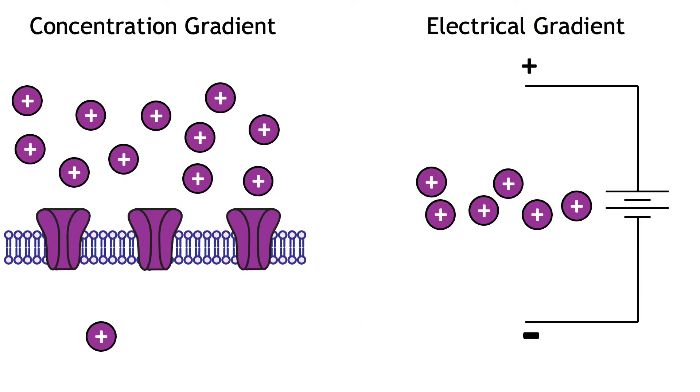Ions move in predictable ways. Concentration and electrical gradients drive ion movement. Ions will diffuse from regions of high concentration to regions of low concentration. Diffusion is a passive process, meaning it does not require energy. As long as a pathway exists, like through an open ion channel, the ions will move down the concentration gradient.